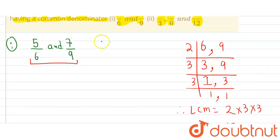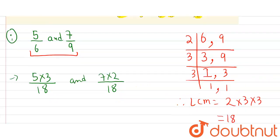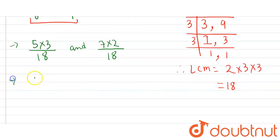So the denominator will become 18 for both fractions. For five upon six: the numerator becomes five into three, because six into three is 18. For seven upon nine: the numerator becomes seven into two, because nine into two is 18. So five into three is 15, giving 15 upon 18, and seven into two is 14, giving 14 upon 18.